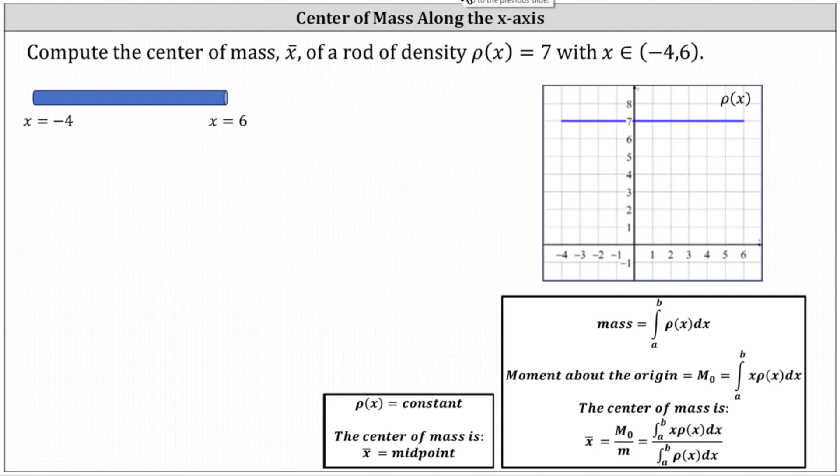Compute the center of mass x bar of a rod of density rho equals seven with x on the interval from negative four to six. We can think of the rod lying along the x-axis. It starts at x equals negative four and ends at x equals six.